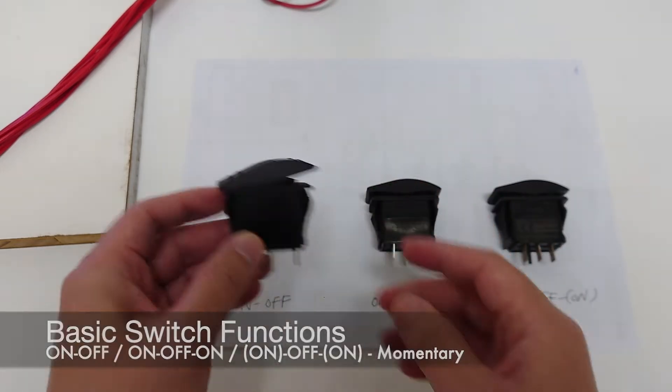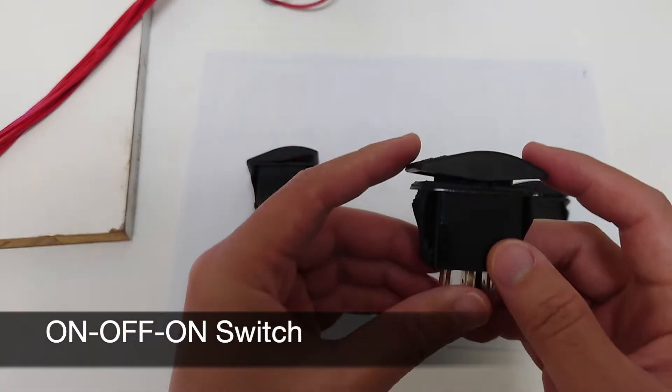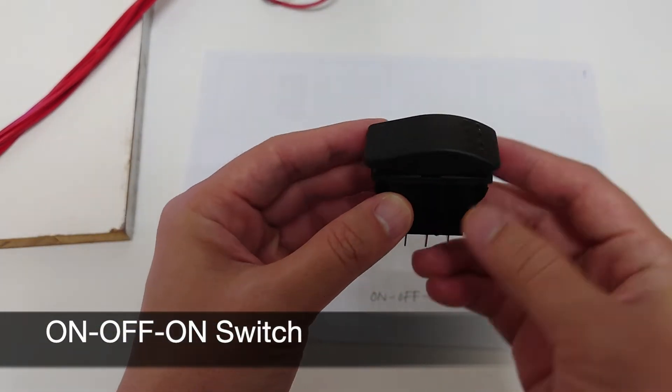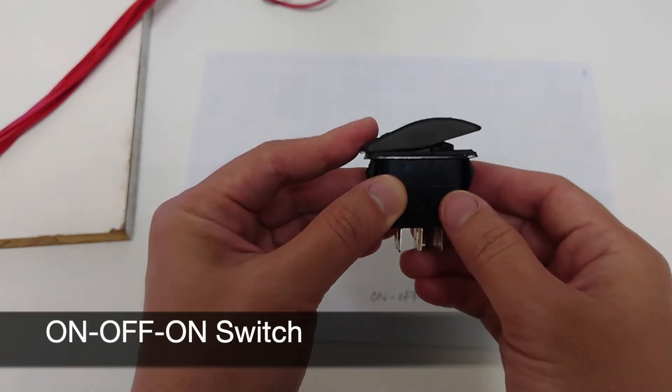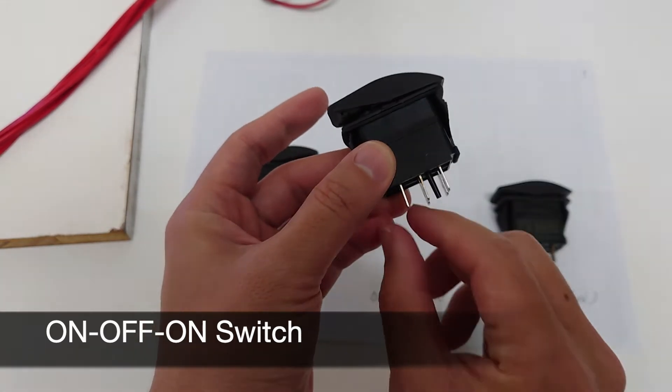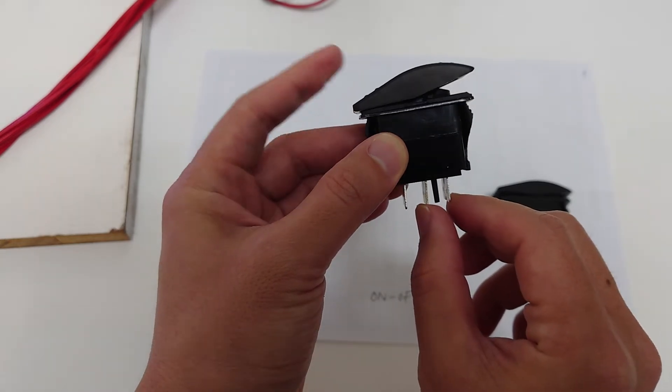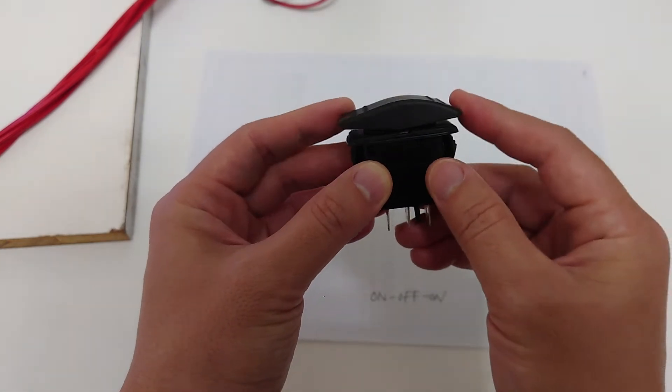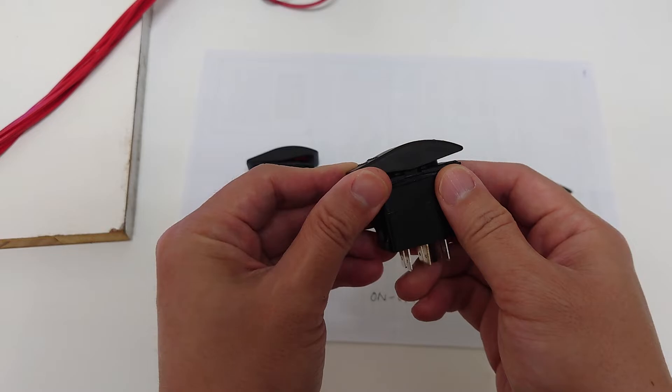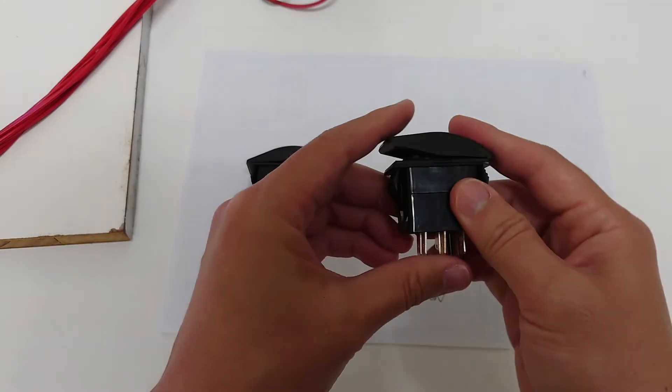This one is an on-off-on switch. The first on is here and the second on is here. When you press here, these two terminals are connected, and when you press the other end, these two are connected. This is suitable for applications like up or down, or fast or slow.